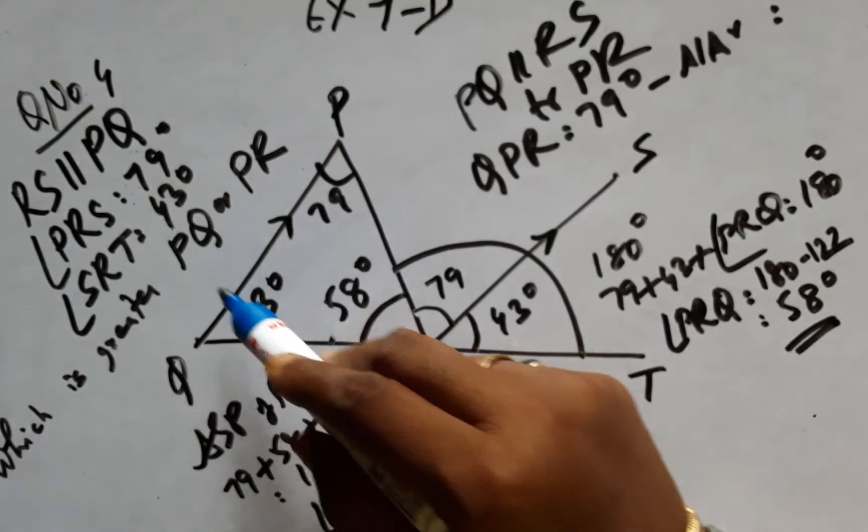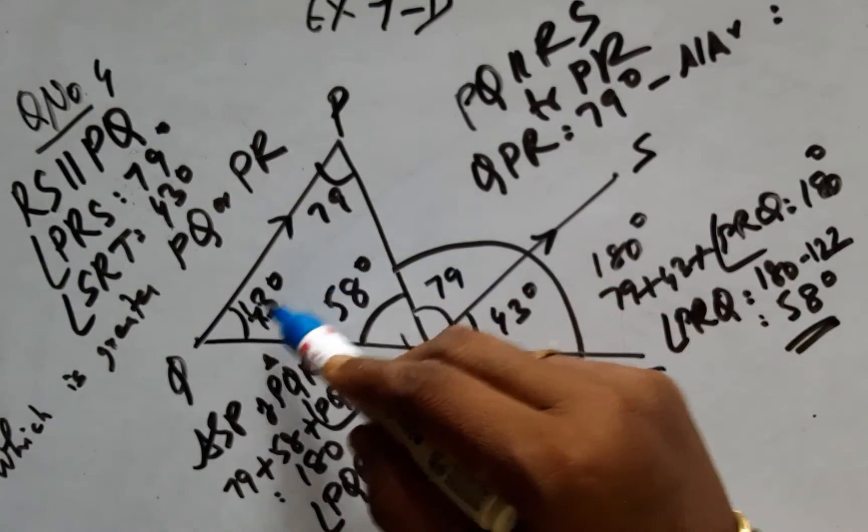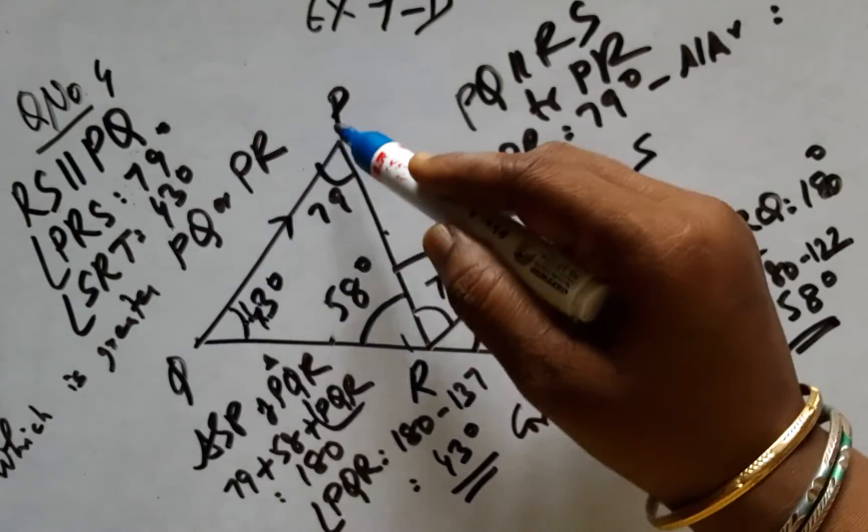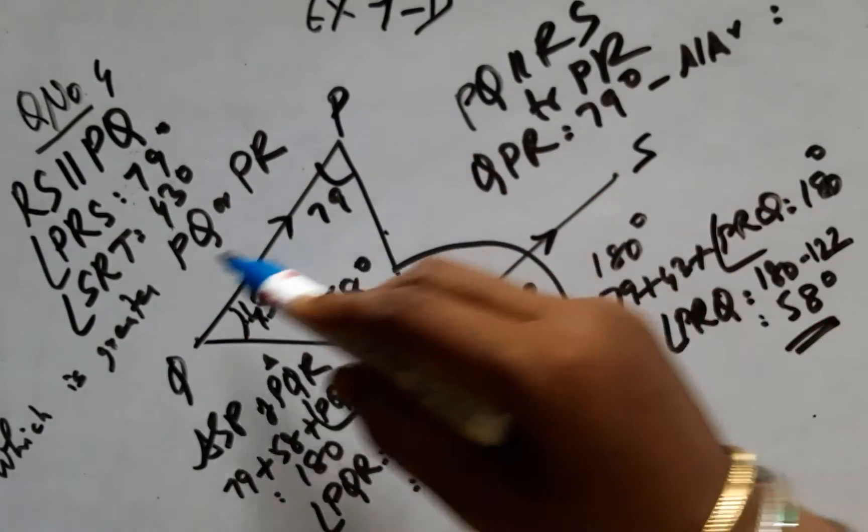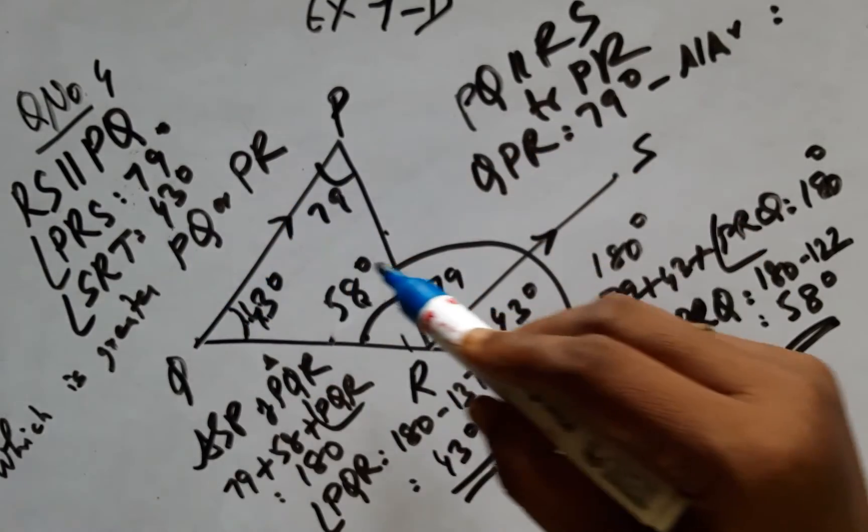Now judging the two sides: I have angle 43 degrees to judge line PR, and for PQ I have to see the angle of 58 degrees. Naturally, PQ is the longest.